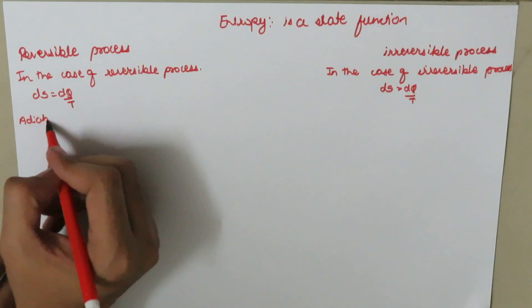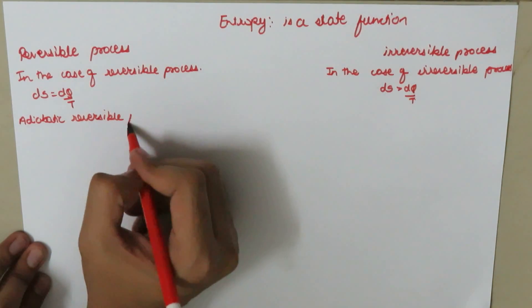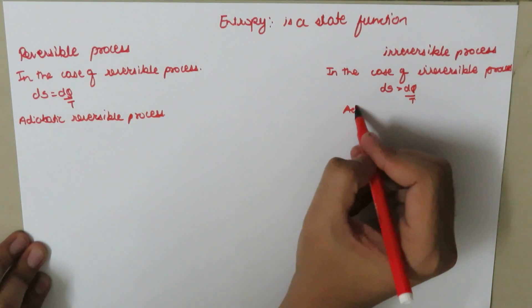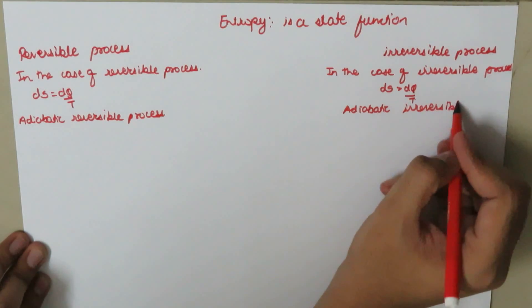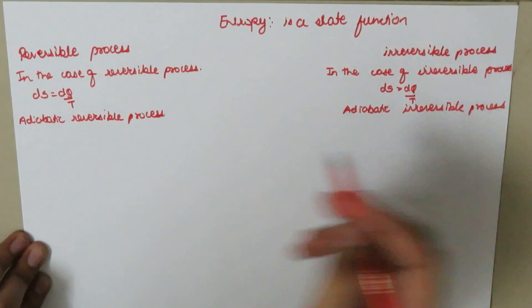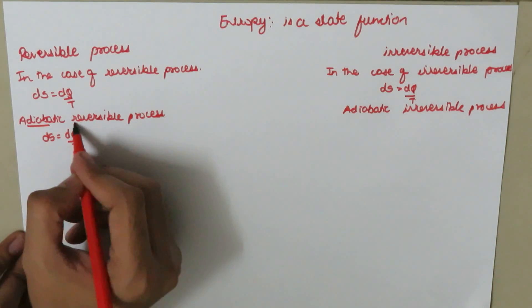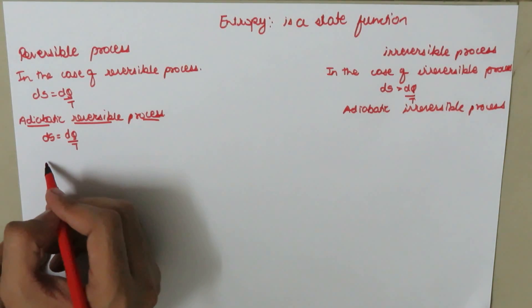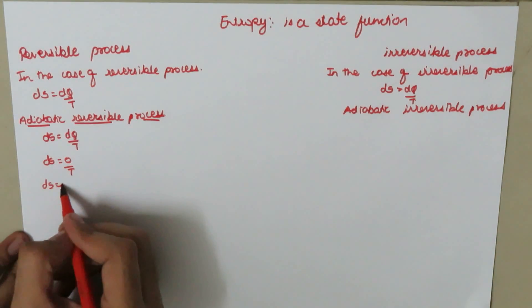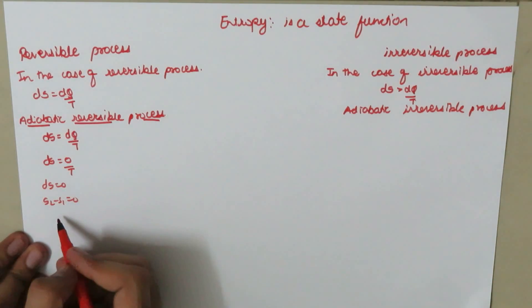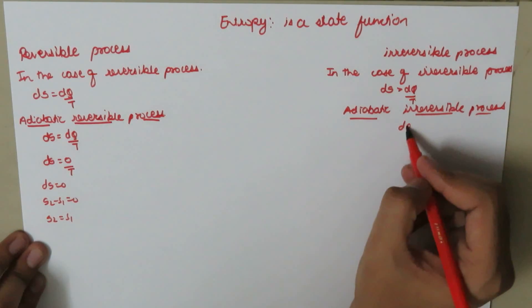Now we are going to find the difference in the adiabatic reversible process. We know that dS is equal to dQ over T, and in this process dQ is equal to 0 since the process is adiabatic. So dS is equal to 0 divided by T, which gives dS equal to 0. Therefore S2 minus S1 is equal to 0, which means S2 is equal to S1.